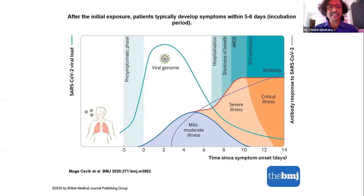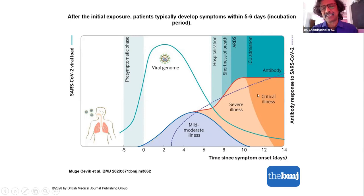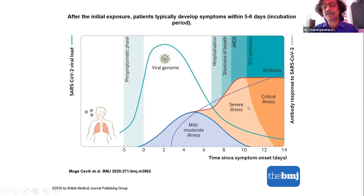In a nutshell, in the incubation or pre-symptomatic phase, the virus replicates and the viral genome multiplies. Simultaneously, the body tries to raise its antibody response. If successful, the patient may be either asymptomatic or have mild to moderate disease. With an unsuccessfully mounted response, the illness may progress, requiring hospitalization, with the patient developing shortness of breath, acute respiratory distress syndrome, and subsequently viremic shock, needing various treatments, either successfully recovering or potentially dying. We have a pre-symptomatic phase, symptomatic phase which could be mild to moderate, severe, and then critical illness.